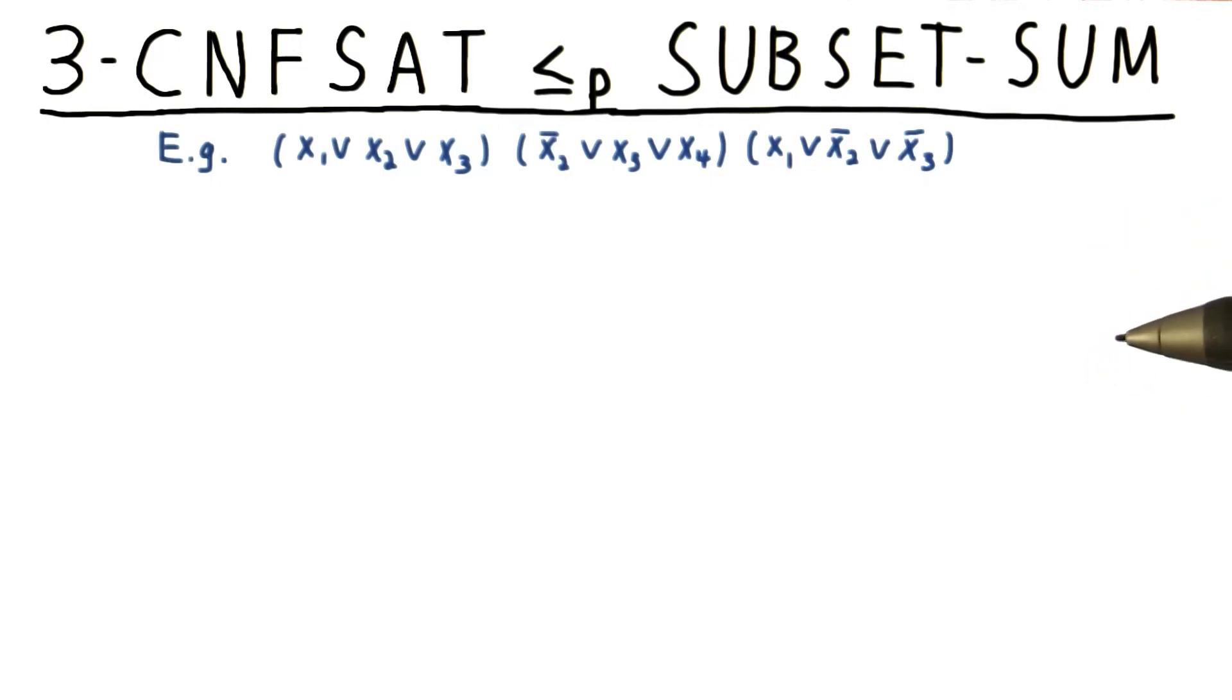Here's the reduction of 3CNFSAT to subset sum. I'm going to illustrate the reduction with an example, because writing out the transformation in its full generality can get a little messy. Even with just an example, it may not be clear why I'm making some of the intermediate steps at the time. It should all become clear at the end, however.